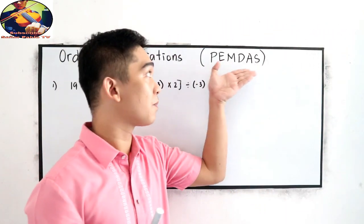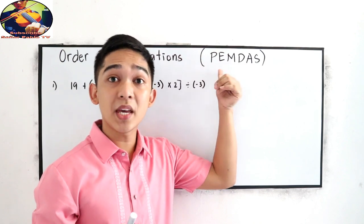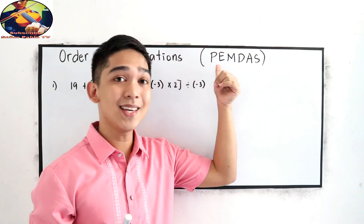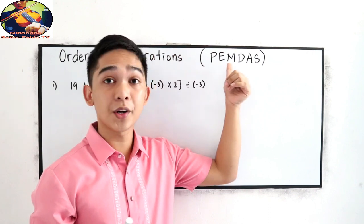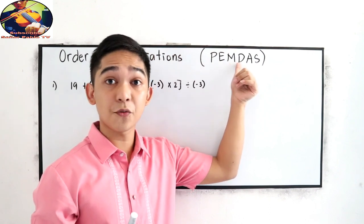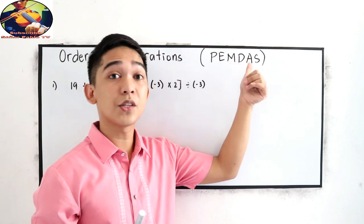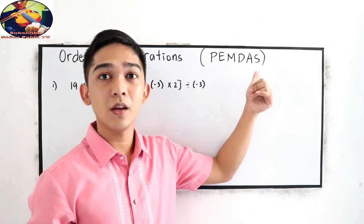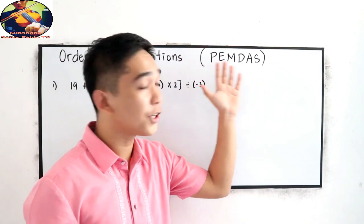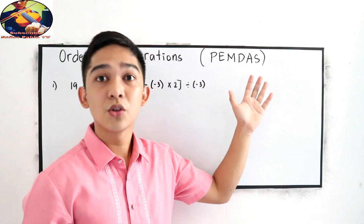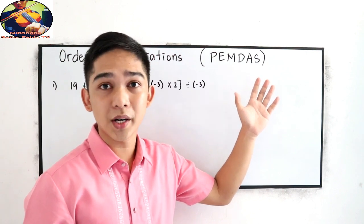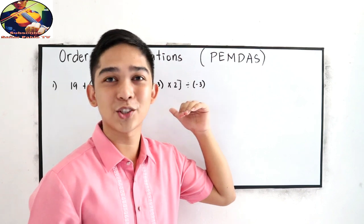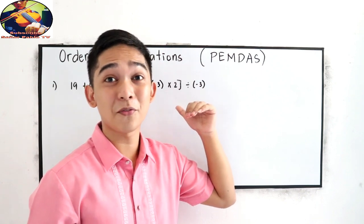In PEMDAS, P stands for parenthesis, E is for exponent, M for multiplication, D is for division, A is for addition, and S is for subtraction. We're going to use this order — PEMDAS — to simplify our expression or operation.